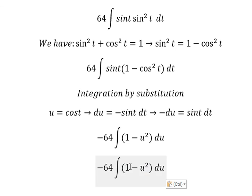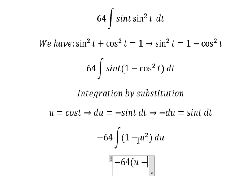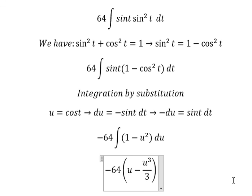So the integration of 1 minus u squared with respect to negative du: the integration of 1 gives u, the integration of u squared gives u cubed over 3, and then I will add the constant c.